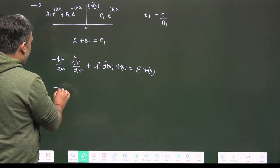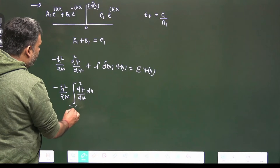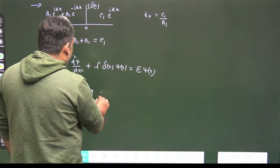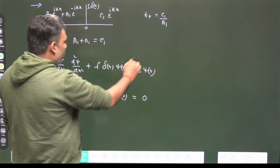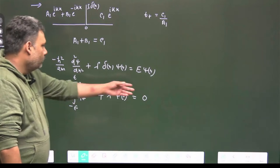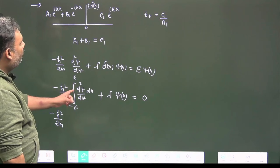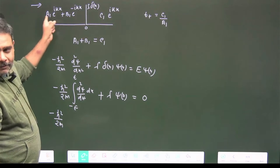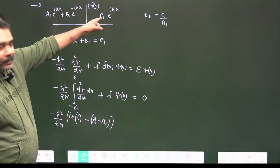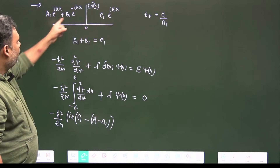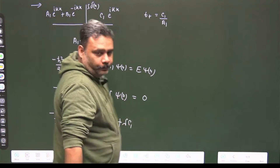Integrating the Schrödinger equation from −ε to +ε, the right-hand side E·ψ integral vanishes as ε→0. For the left side, differentiating the wave functions gives −(ℏ²/2m)·[ik·c1 − (ik·a1 − ik·b1)] + λ·ψ(0) = 0. Since ψ(0) = c1, we get the discontinuity condition involving ik(c1 − a1 + b1) and the term 2mλ/ℏ².